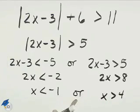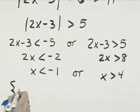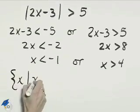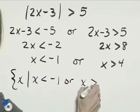Because this is the union, we can join those by the word OR, and the solution set will be x such that x is less than negative 1, or x is greater than 4.